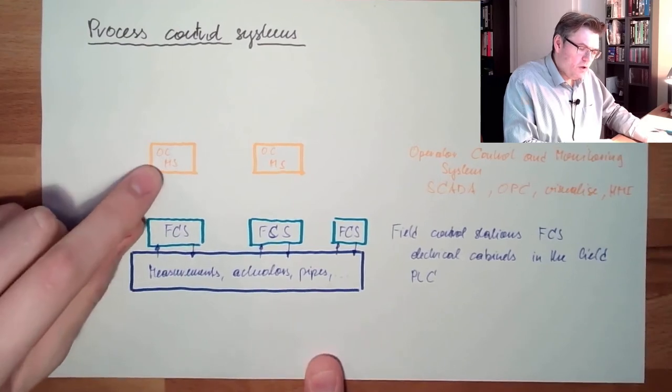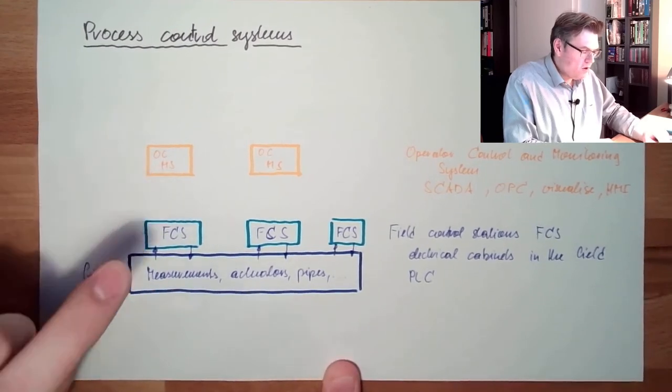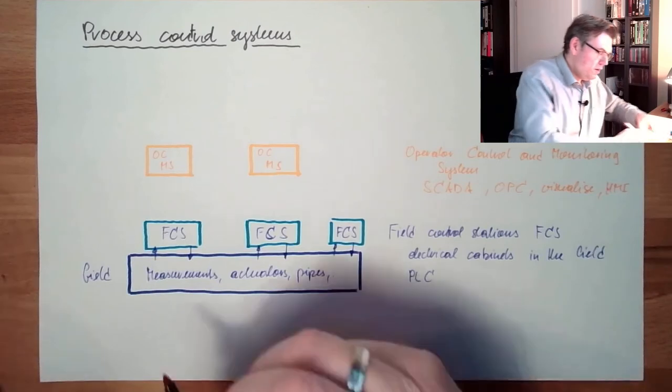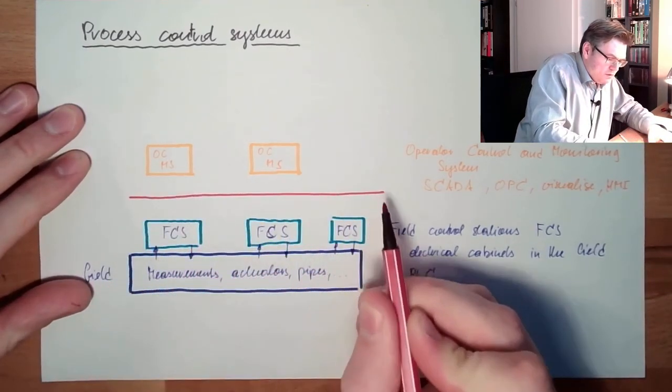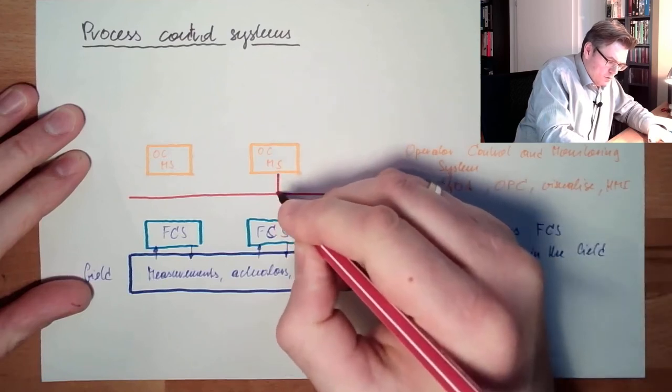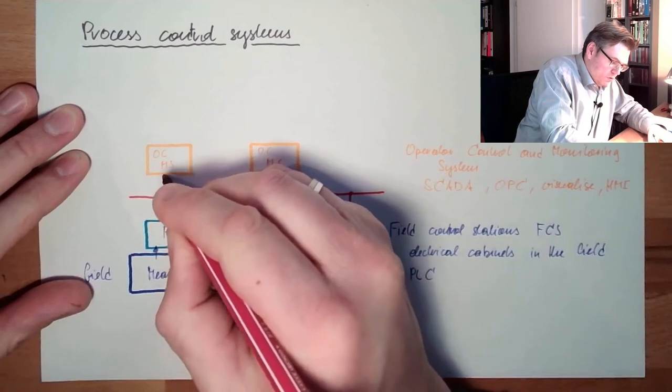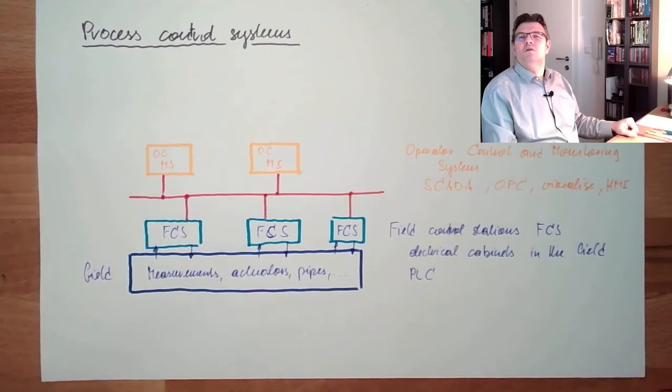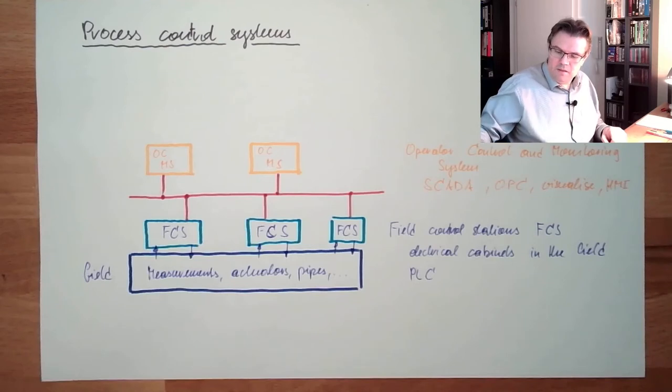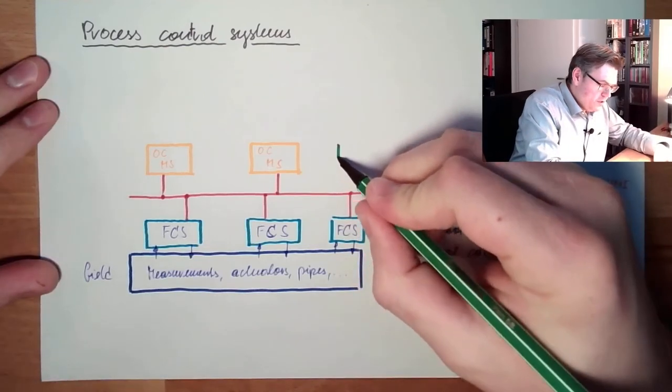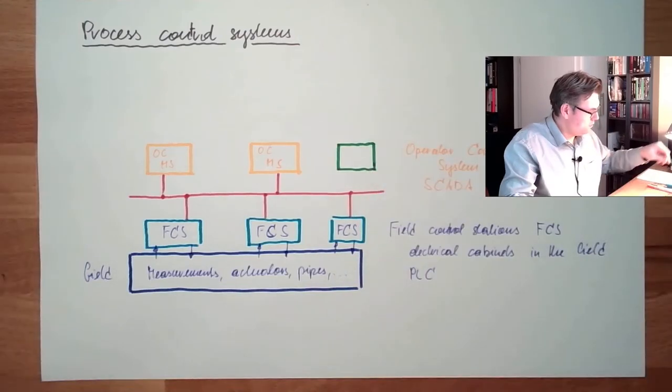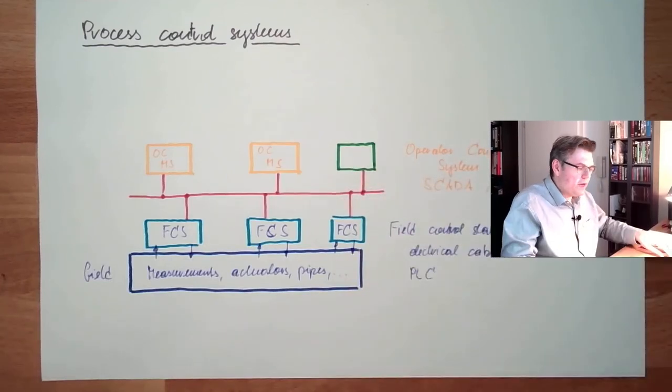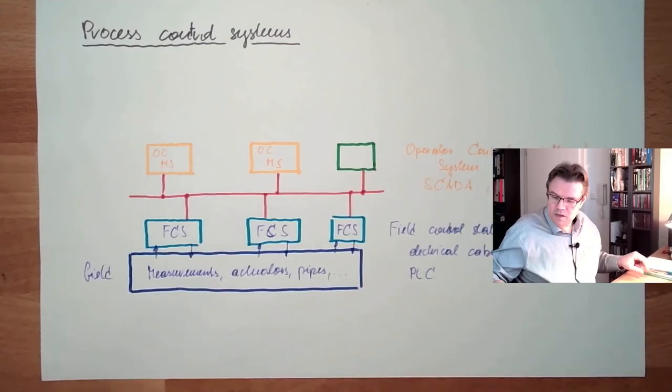Those operating control and monitoring stations are connected to the field control stations via bus system. Here in between there is somewhere a bus system. We are also going to talk about this because there are different possibilities. They are communicating with the bus system to each other.